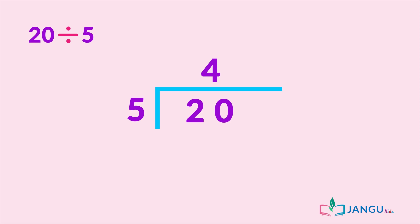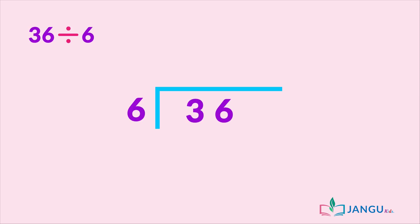And for our last example, 36 divided by 6. 6 cannot go into 3. So we divide both numbers, which is 36. 36 shared into 6 will give us 6. We write the answer on top. 36 divided by 6 equals 6.